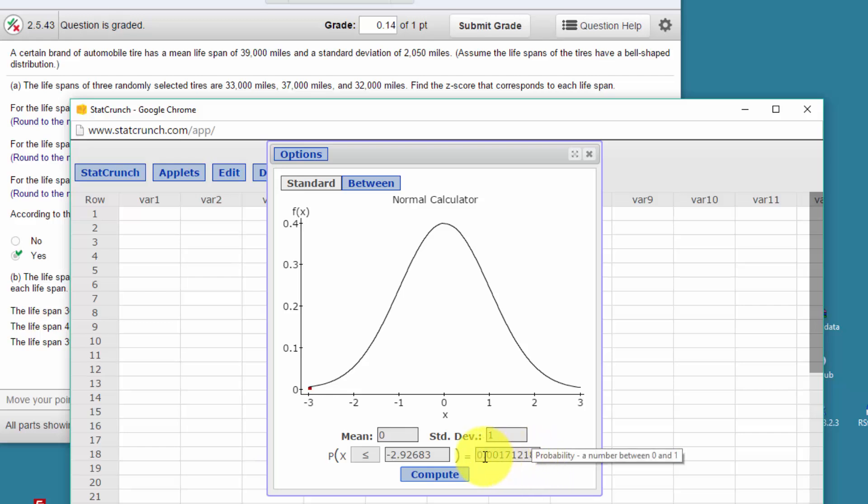Back into the normal curve—normal distribution of zero mean and standard deviation of one. Okay, that's the first part, and you would do the 37 and 32 thousand miles the same way.